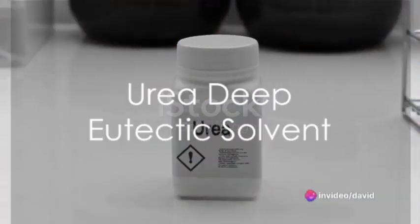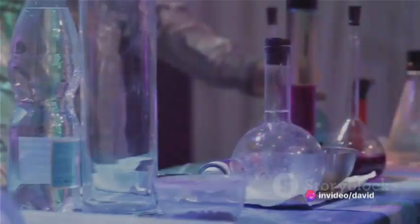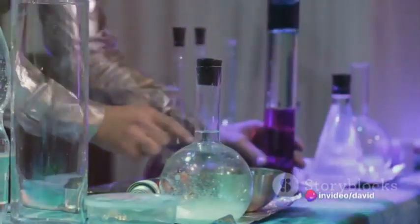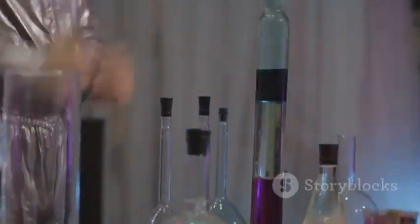Now, let's turn our attention to urea deep eutectic solvent. This might sound like a mouthful, but it's simply a liquid solution that forms when urea and a halide salt like zinc chloride are mixed together at a certain ratio.